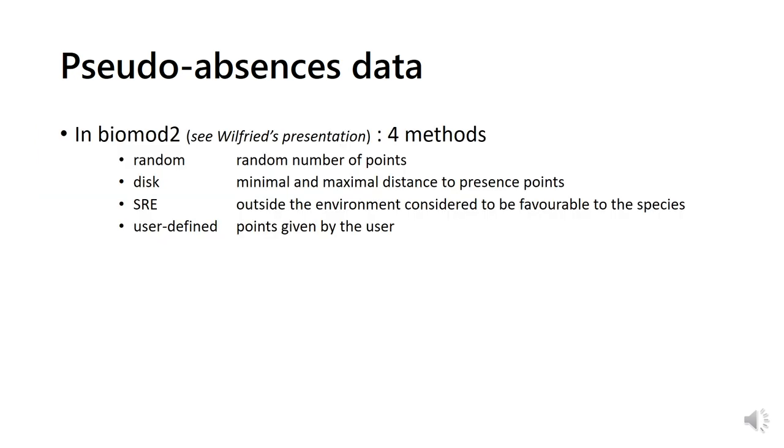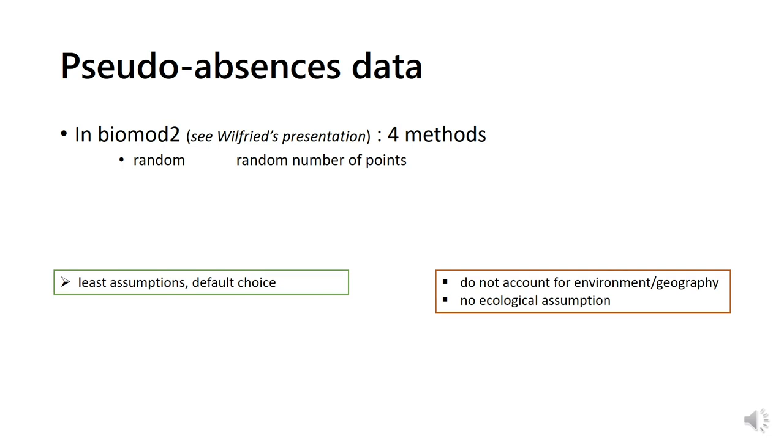In Biomod2 package, four different methods are implemented to select pseudo-absences. The random method, the disk method, surface range envelope, and points directly defined by the user. The random method should be the default choice, since it's the one with the least assumptions. It does not account for environment or geography, and depends on no ecological assumption.